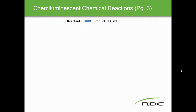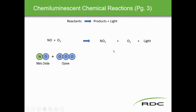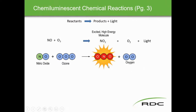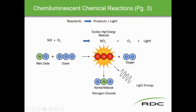In this reaction, we have NO (nitric oxide) and O3 (ozone), and once they react we produce NO2 (nitrogen dioxide), plus oxygen, plus light energy. The amount of light energy is proportional to the amount of nitrogen dioxide in the sample. This is the whole reaction that the analyzer is looking for.